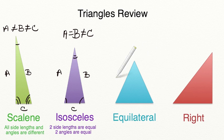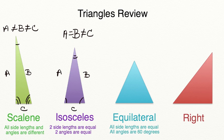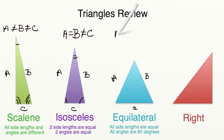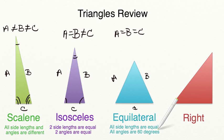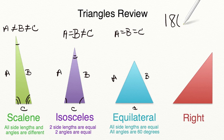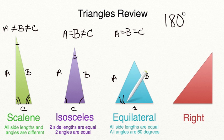Let's move on to our equilateral triangle. An equilateral triangle has all side lengths that are the same. So if we have side lengths A, B, and C, they are all going to be equal to each other. The fun thing with an equilateral triangle is that all angles will always be 60 degrees, because the sum of all angles in a triangle always equals 180 degrees, and 180 degrees divided by three angles will always equal 60 degrees.